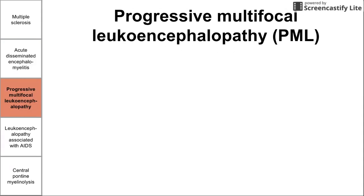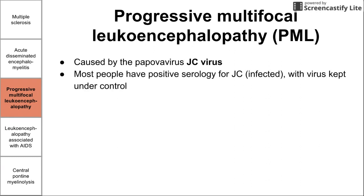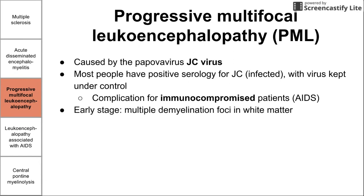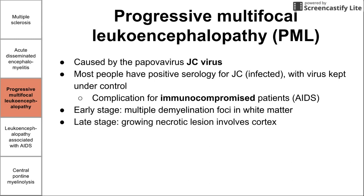Next is progressive multifocal leukoencephalopathy, abbreviated PML. This is caused by the JC virus. Interestingly, approximately 85 to 90% of people have positive serology for the JC virus, but it is kept under control in most people. PML is really a complication for immunocompromised patients, such as those with AIDS, where the virus reactivates. Early disease shows multiple demyelination foci in the white matter; later, necrotic lesions can involve the cortex.